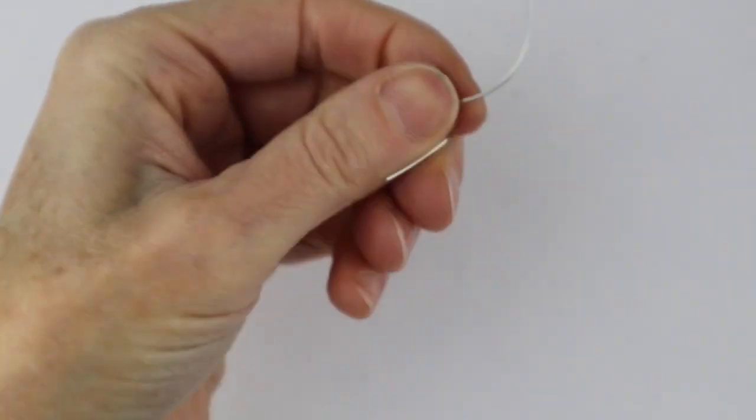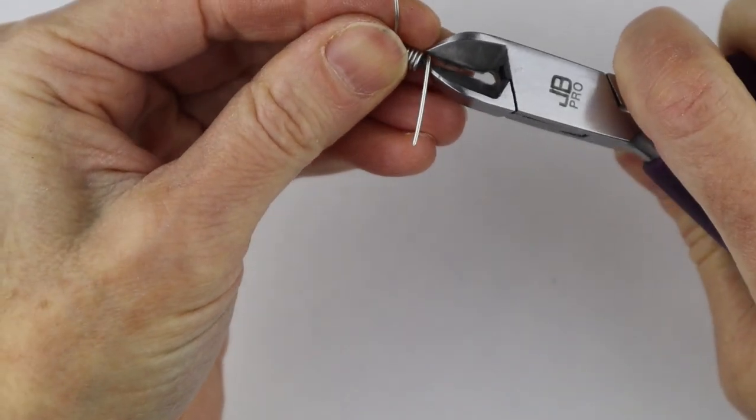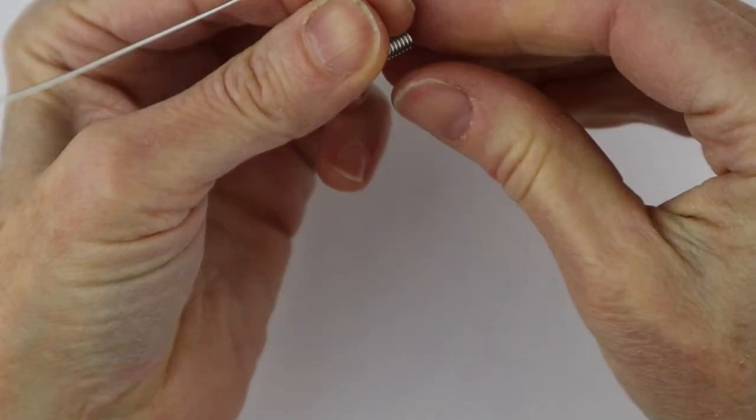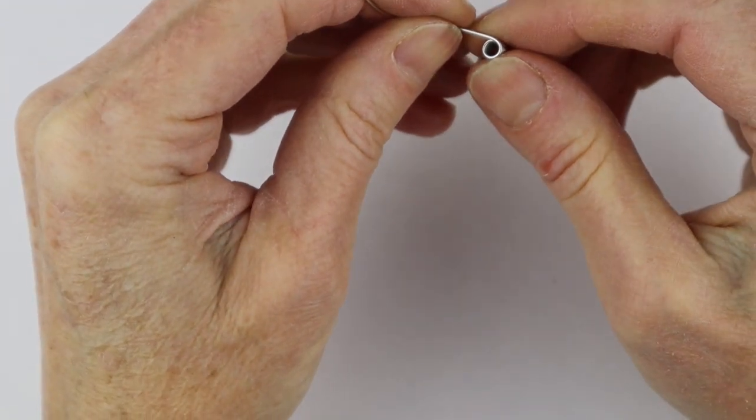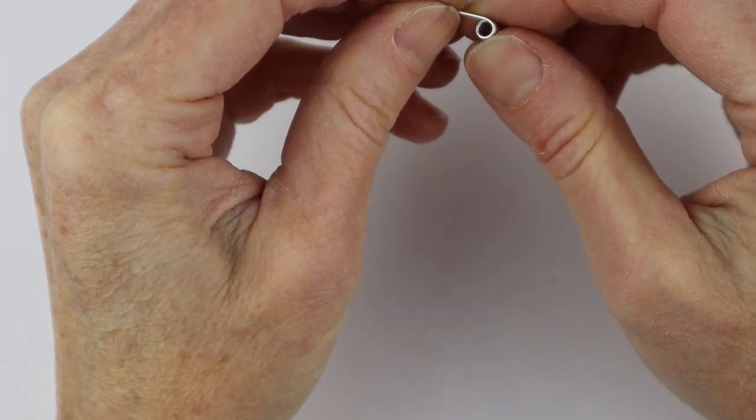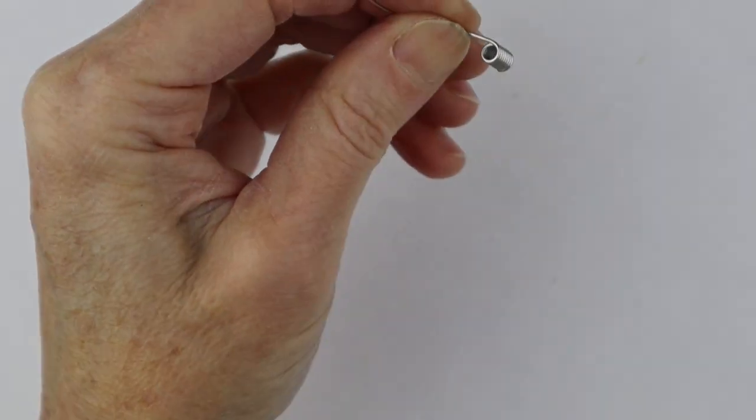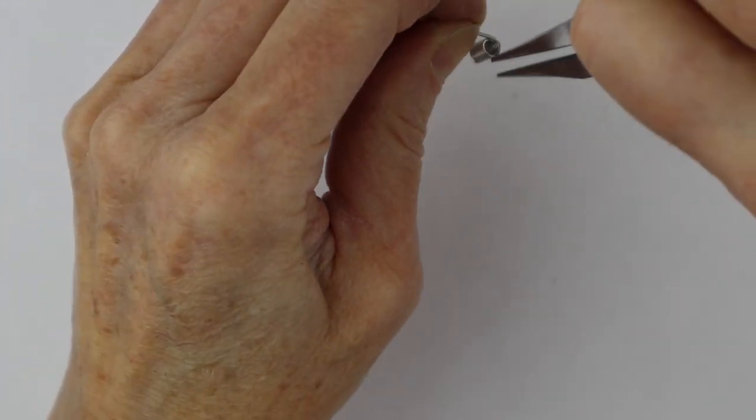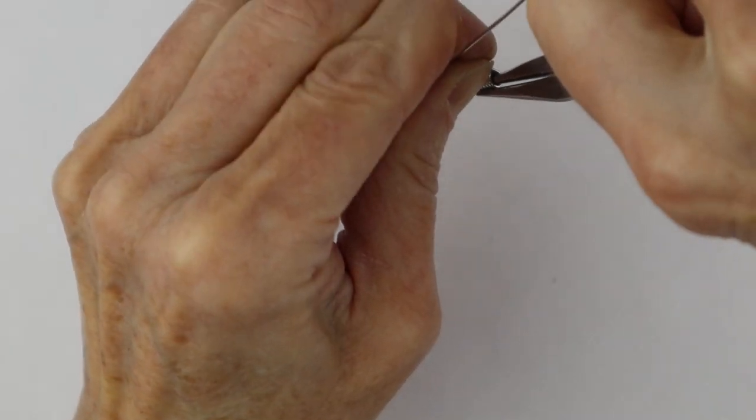You clip one end just flush, and then this end you want to make a little loop on. What you can do for that is just kind of bend this a bit to the middle.